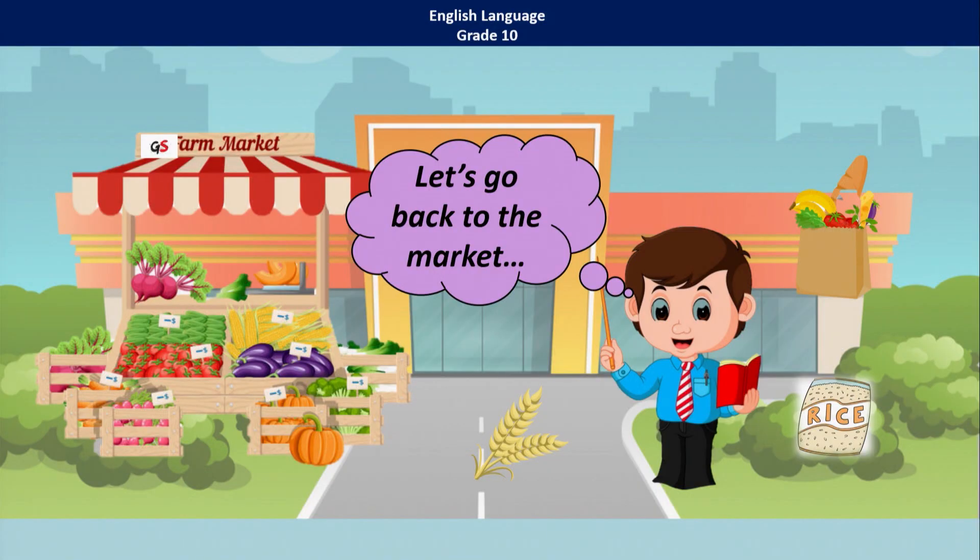My dear students, hope you can remember that I did a lesson on conditional clause type 1. In the first type, we discussed possible things to happen. And today, I'm going to discuss type 2 and type 3. Hope you can remember I talked to you about an imaginary island where people did not have a monetary system, so they exchanged goods and services. So let us go back to that market.